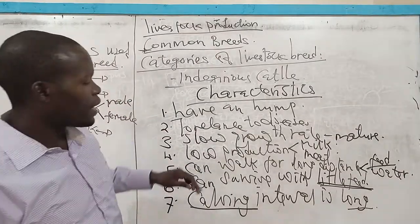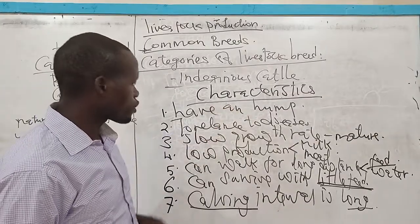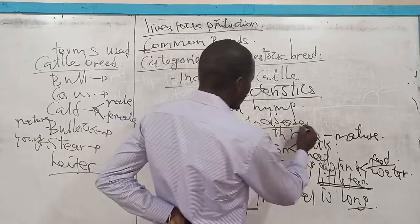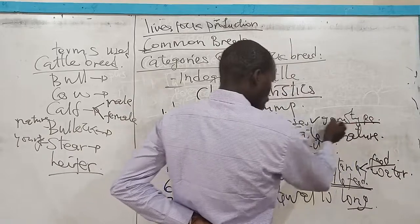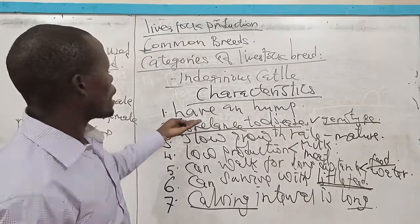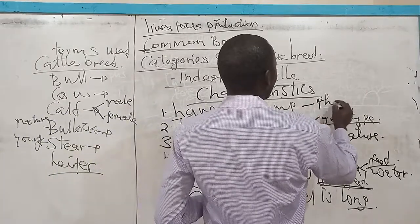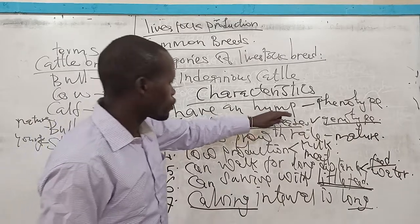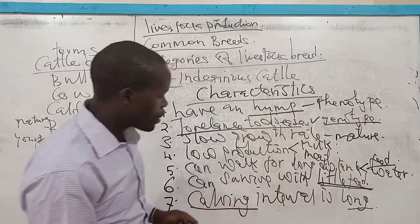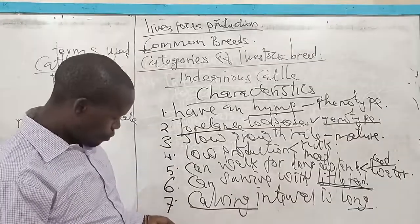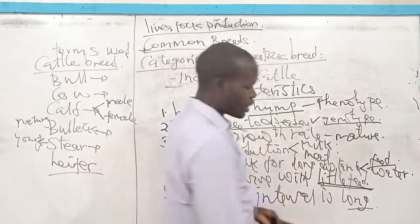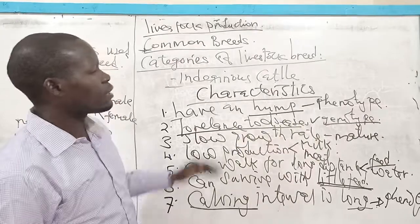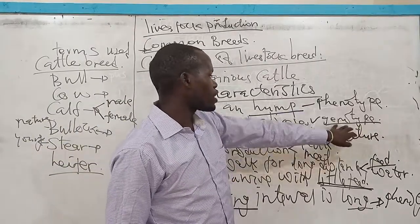You should be at a point where you are able to differentiate between the genotype and the phenotype characteristics. For instance, the aspect of tolerating diseases is a genotype characteristic — you cannot see it with your eyes but it is a feature in them. But having a hump is a phenotype characteristic — by use of your eyes you can see it on the surface of their body. Similarly, the calving interval is observable, so you can classify it as phenotype and not genotype. Be at a point of knowing the various adaptations and classifying them as either phenotype or genotype.